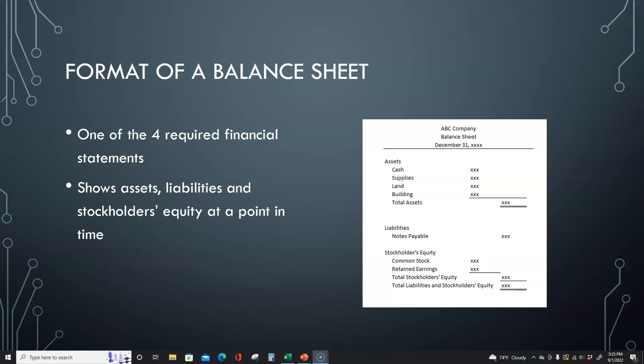In the last video we looked at the effect of each transaction on the accounting equation. We looked at transactions for one year and we made sure that the accounting equation at the end of the accounting period was in balance. Now I'm going to introduce you to the first financial statement. This is not the first financial statement that we prepare but it is one of the four required financial statements, and it's the first one I'm going to teach you about because it's really easy to understand.